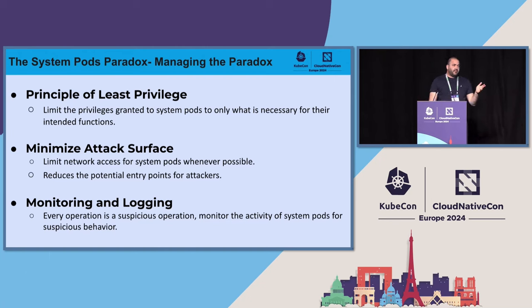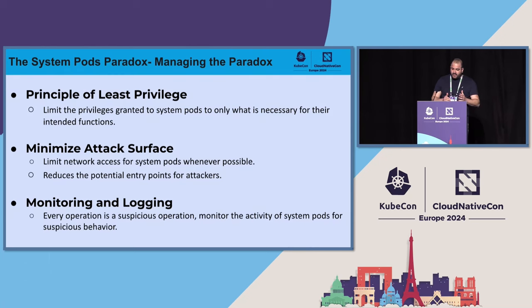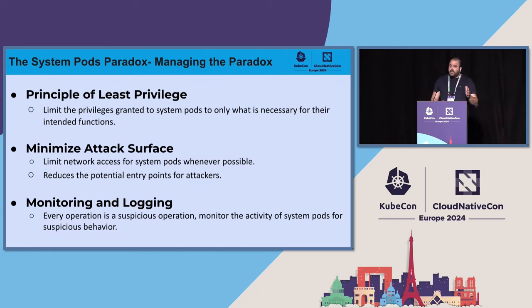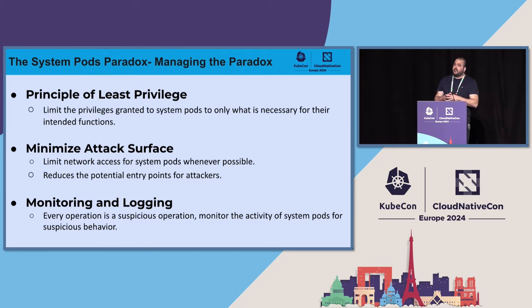On an optimistic note, this paradox is manageable. With a proactive approach that mitigates the inherent security risk, we can grant system pods only the minimum level of access they need to operate and limit network access of system pods wherever possible. And finally, proactive monitoring and logging of system pod activity, treating every operation as a potential suspicious activity.